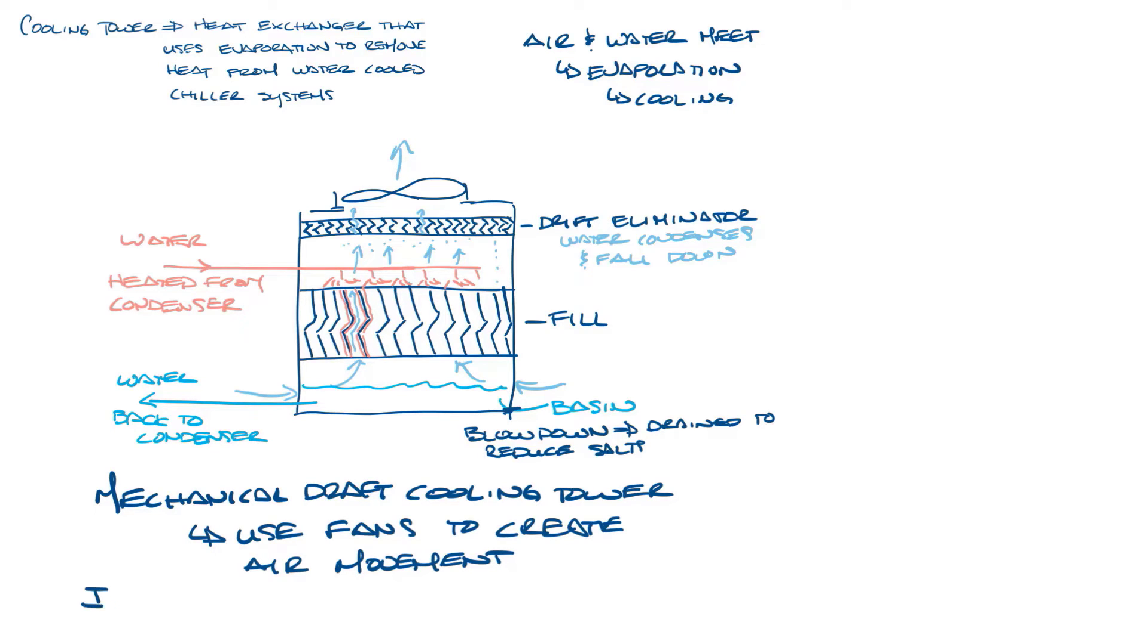Induced draft cooling towers have a fan that's located at the top of the cooling tower pulling the air through the tower. Forced draft cooling towers have a fan located at the bottom pushing the air into the tower. So you can see with the fan on top of my drawing it's an induced draft tower.